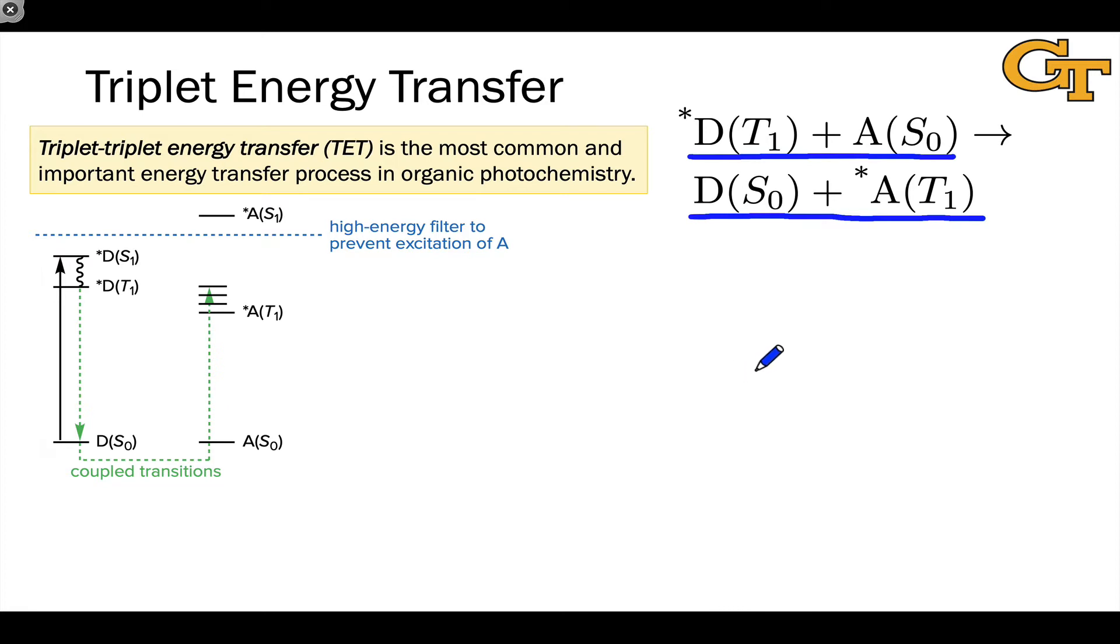So overall, triplet energy transfer is actually spin allowed. The way this typically goes down in practice is we photoexcite D from its ground singlet state to its first excited singlet state. Rapid intersystem crossing and vibrational relaxation convert the S1 state of D star into the T1 state of D star.